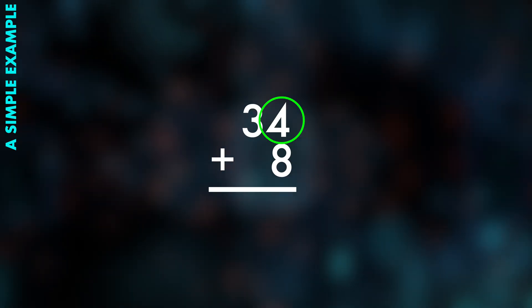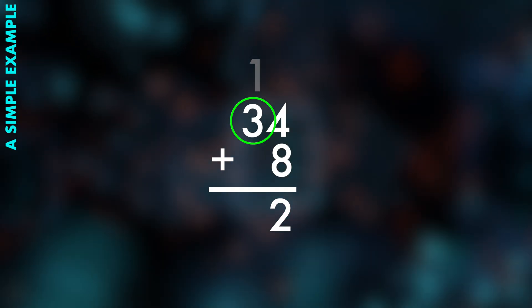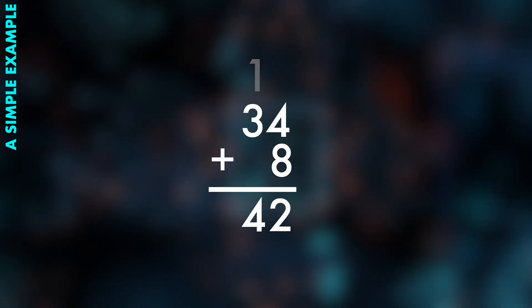A quick example: what is 34 plus 8? 4 plus 8 is 12, so we write the 2 and carry the 1. Then, next digit, add the 3 with the carried 1 and we get 4. The answer is, of course, 42.